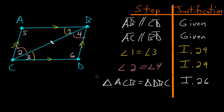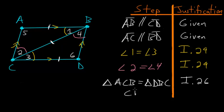That proves one part of this proposition. Now we just need to show that opposite sides and opposite angles are equal, which is simple because we've already proven the two triangles are equal. We just match up corresponding sides: CD corresponds to AB, so CD equals AB. Also, BD corresponds to AC, so BD equals AC.